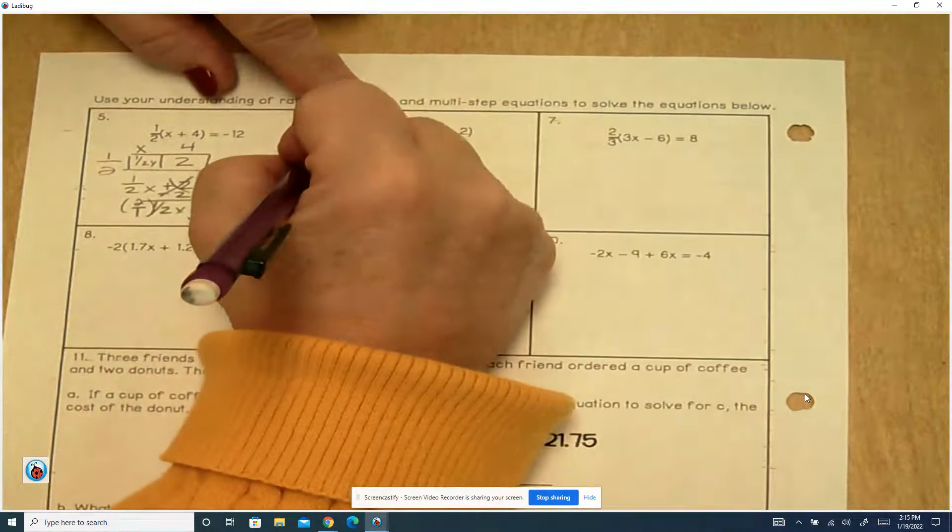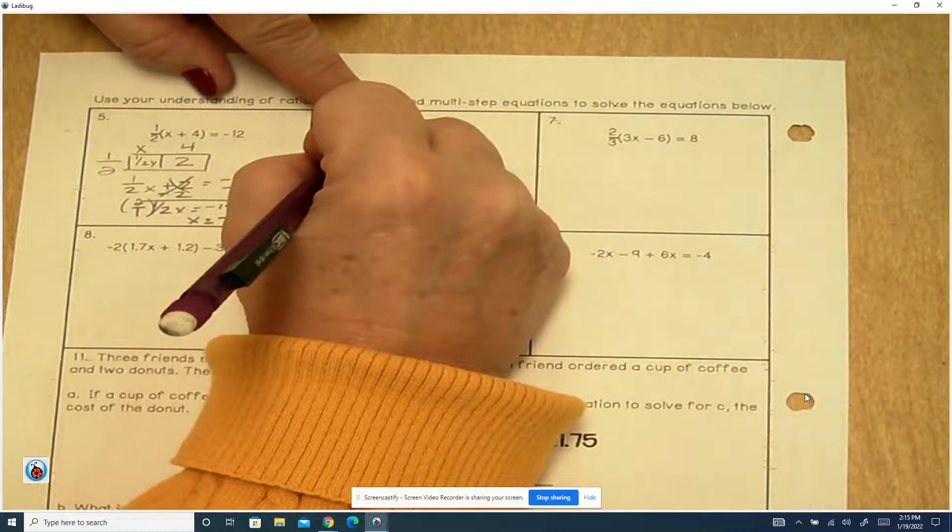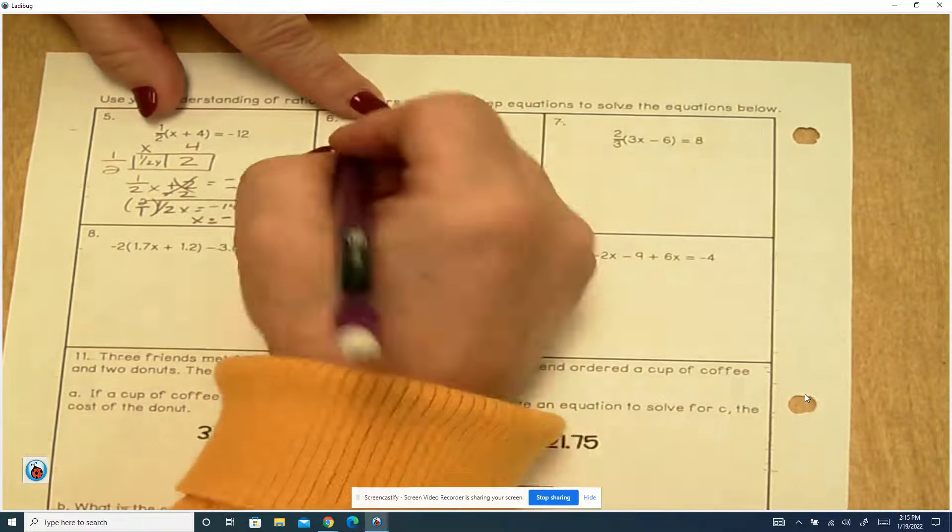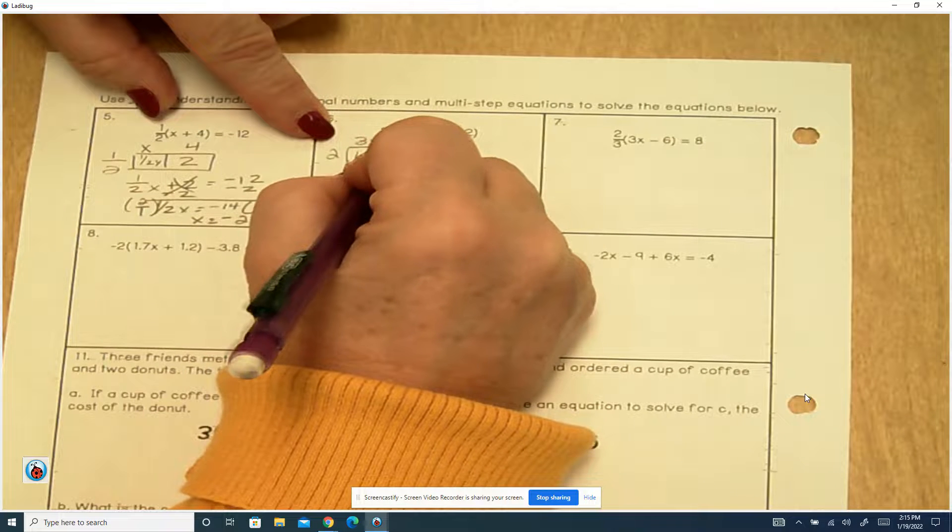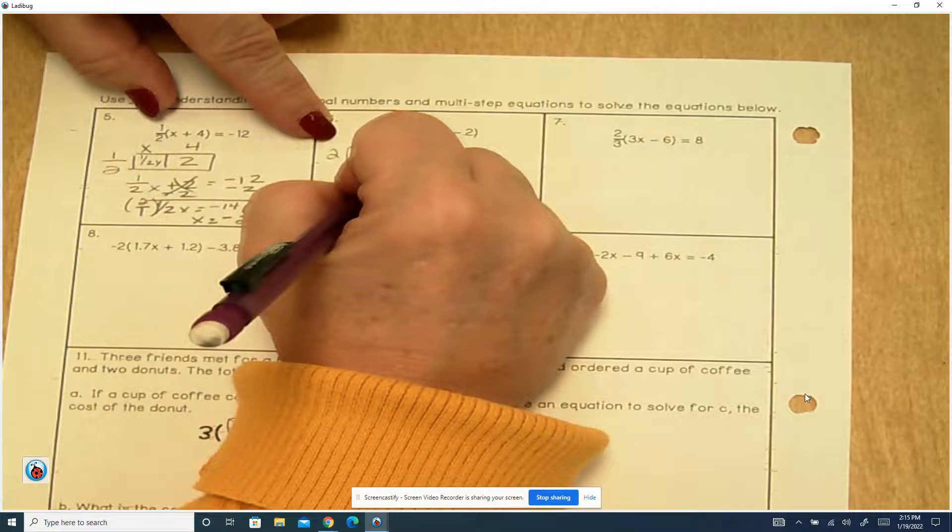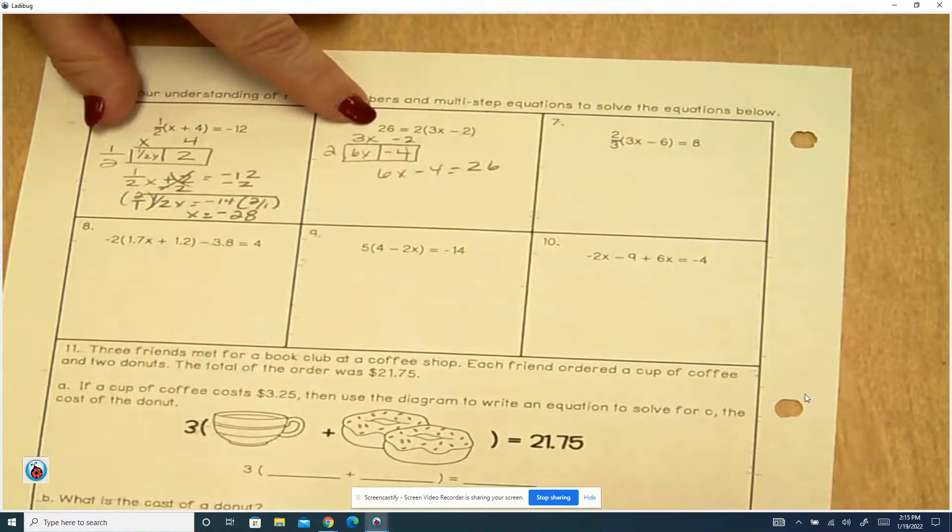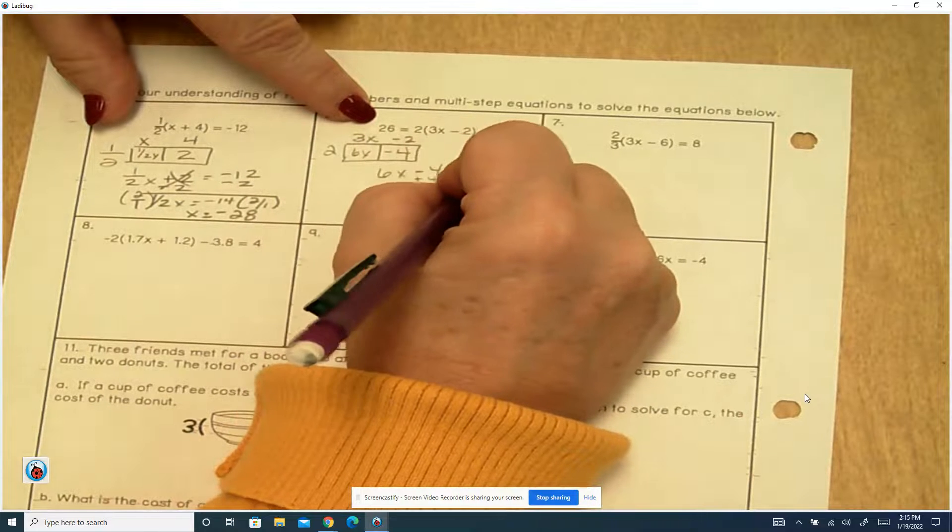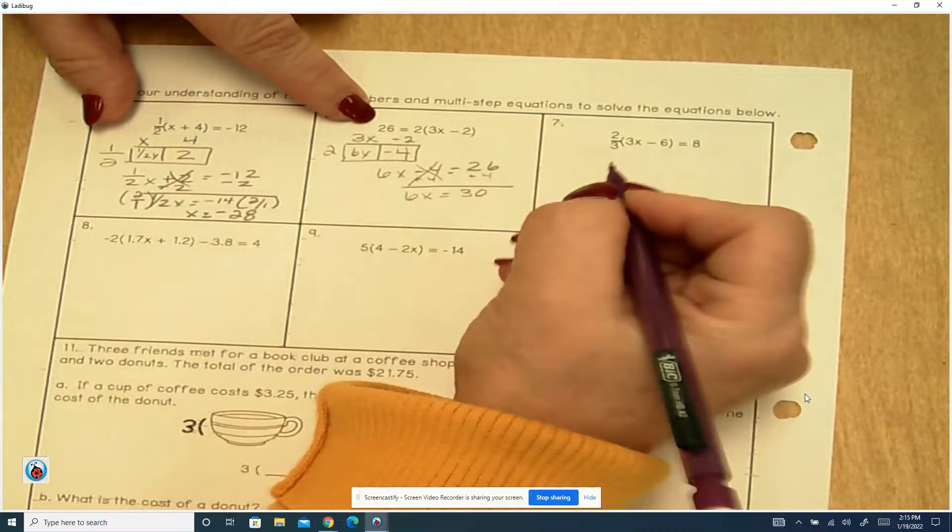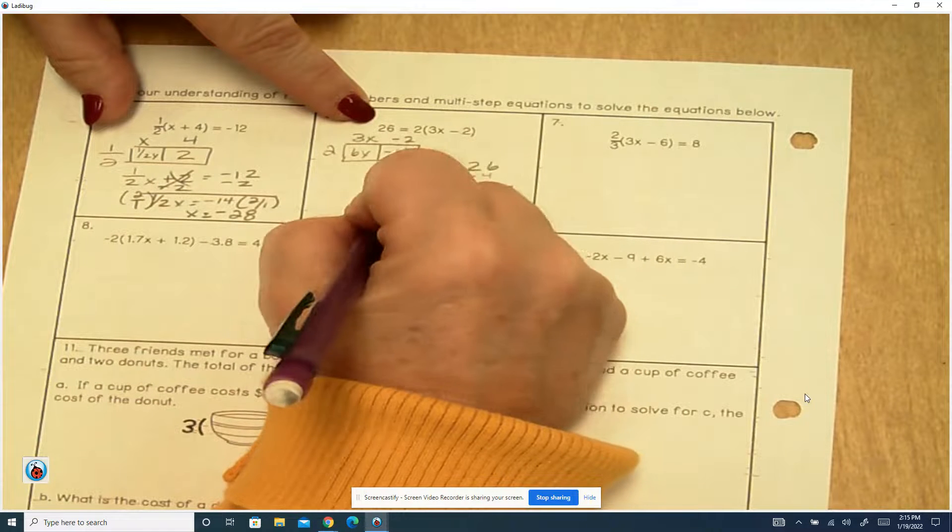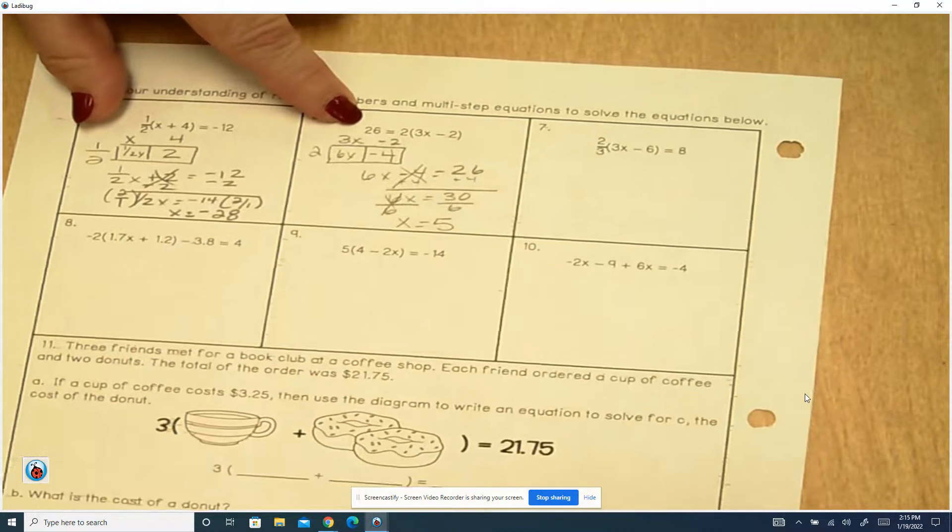I'm just going to turn this one around, which you can do. 3x and a minus 2. 2 times 3x is 6x. 2 times a negative 2 is a negative 4. So 6x minus 4 equals 26. We'll add 4 to both sides. And that leaves me with 6x equals 30. Divide by 6 on both sides. x is equal to 30 divided by 6 is 5.